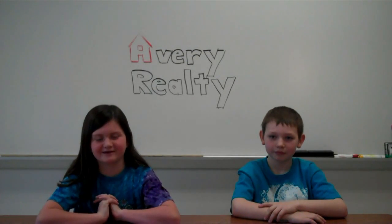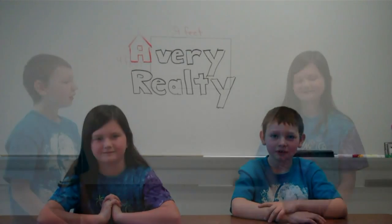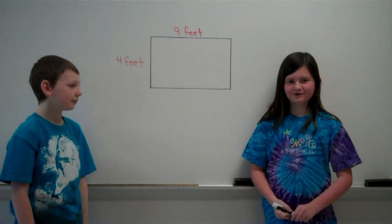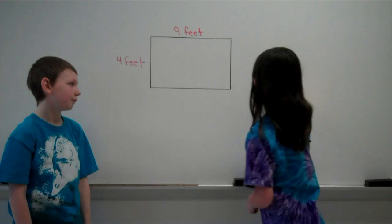You find the area by multiplying the length times the width of a rectangle. Now let's go to the board. Today we're going to show you how to find the area of a rectangular room. In order to find the area, you have to multiply the length times the width.